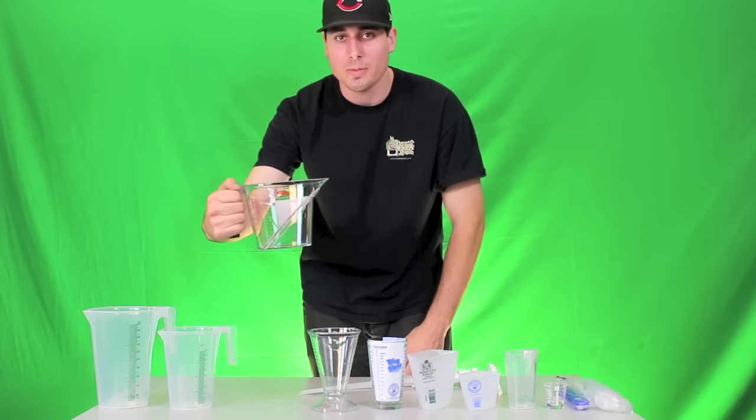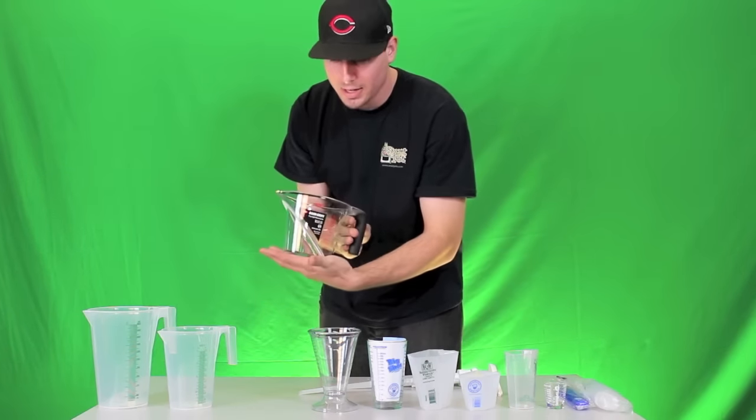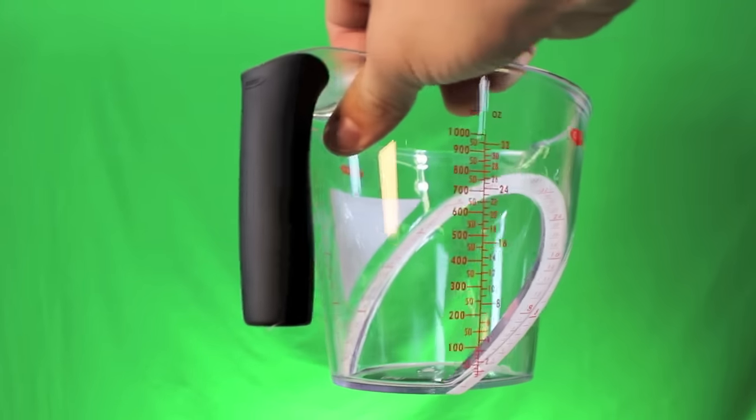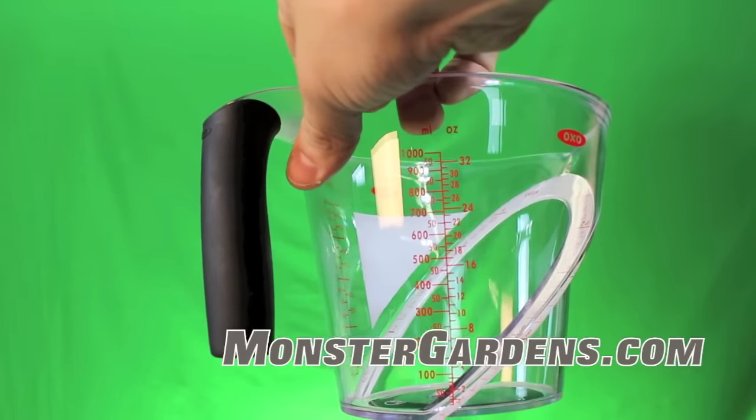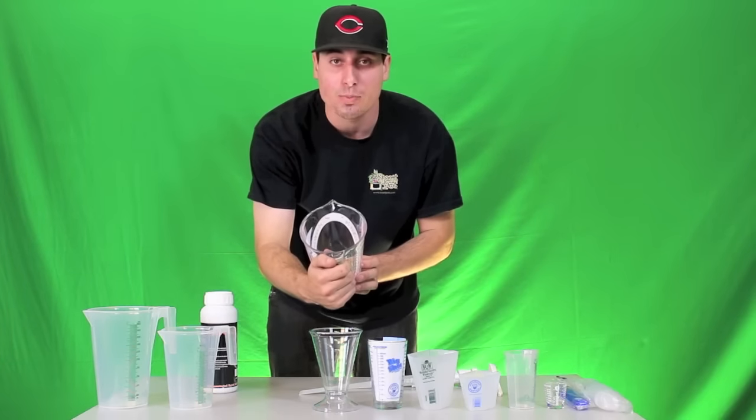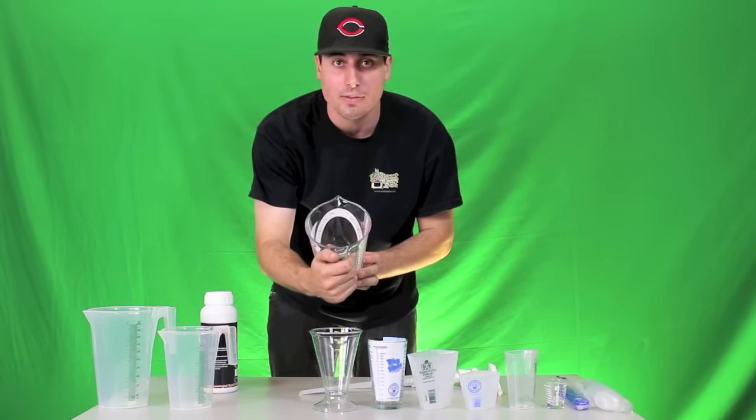This is going to be the Good Grips measuring cup. This one's extremely cool because it has the nice rubber handle, and you can see that it's going to have the different measurements down the inside. The numbers are also written in red and very bright for those of you who do not see very well.